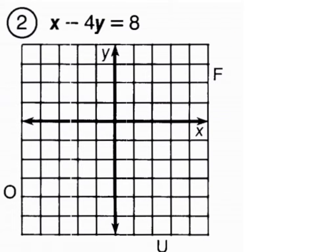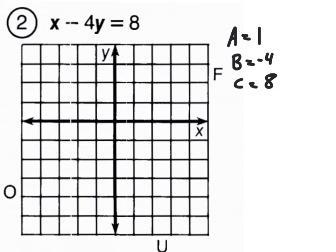We're going to do number two together as well. First, pick out a, b, and c. There's no number in front of x, so remember there's a coefficient of one there — a is one. b is negative four, because it's plus negative four. And c is eight.